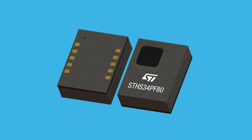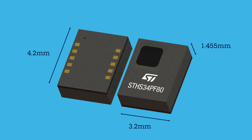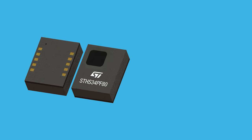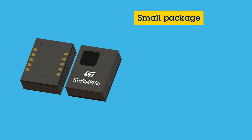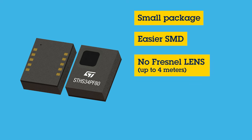Additionally, the TMOS sensor has a small form factor of roughly 3 by 4 millimeter LGA surface mount packaging, allowing for an easier assembly process. Also, the PIR sensor requires a frontal lens for it to function, while the TMOS IR sensor requires no frontal lens up to 4 meters of detection.